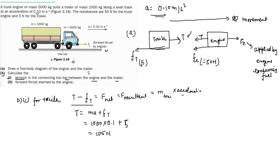Now for part B2: forward thrust exerted by the engine. Looking at the engine diagram, on the right-hand side is the forward thrust Fe. Minus the other forces acting in the opposite direction — so Fe minus tension minus friction equals the net force.